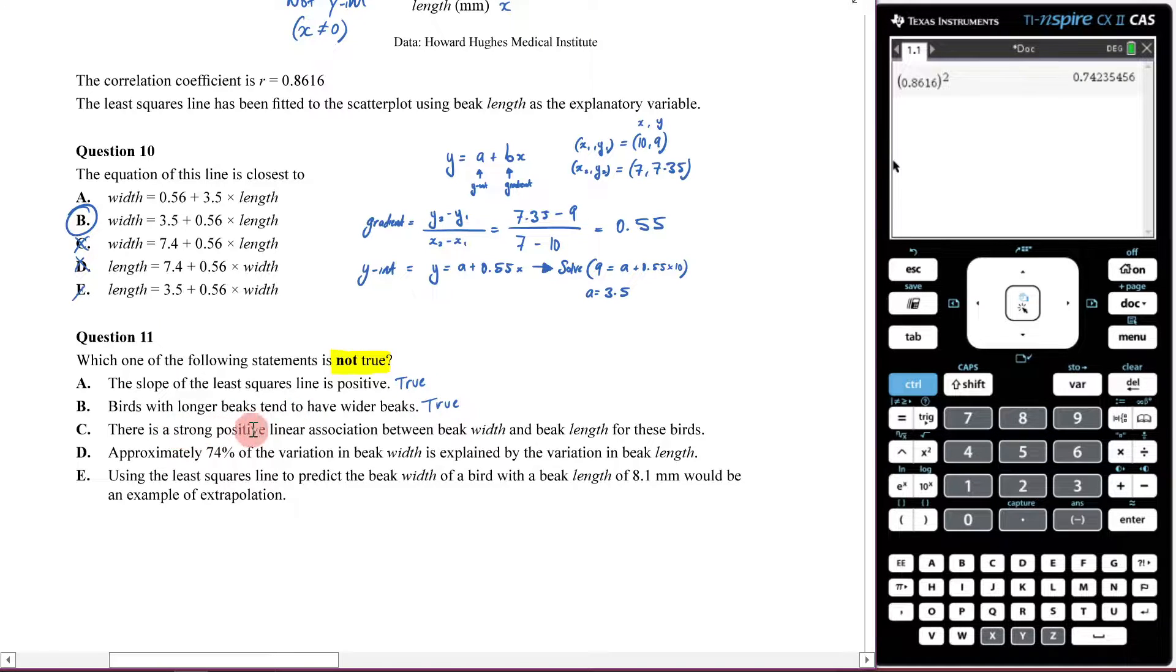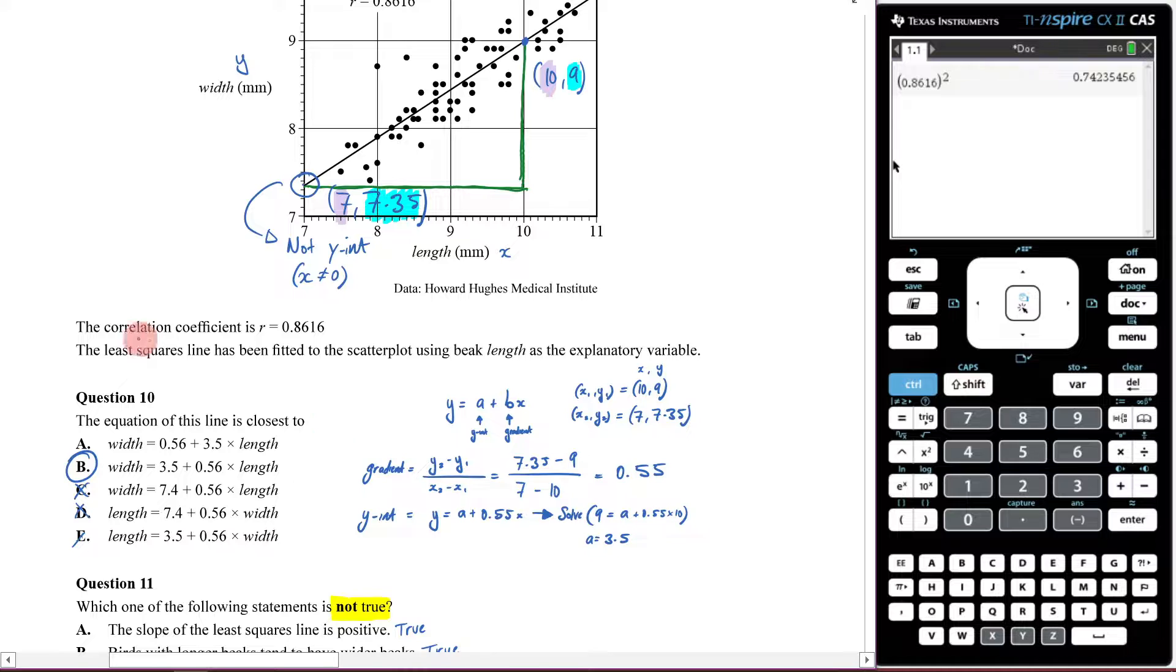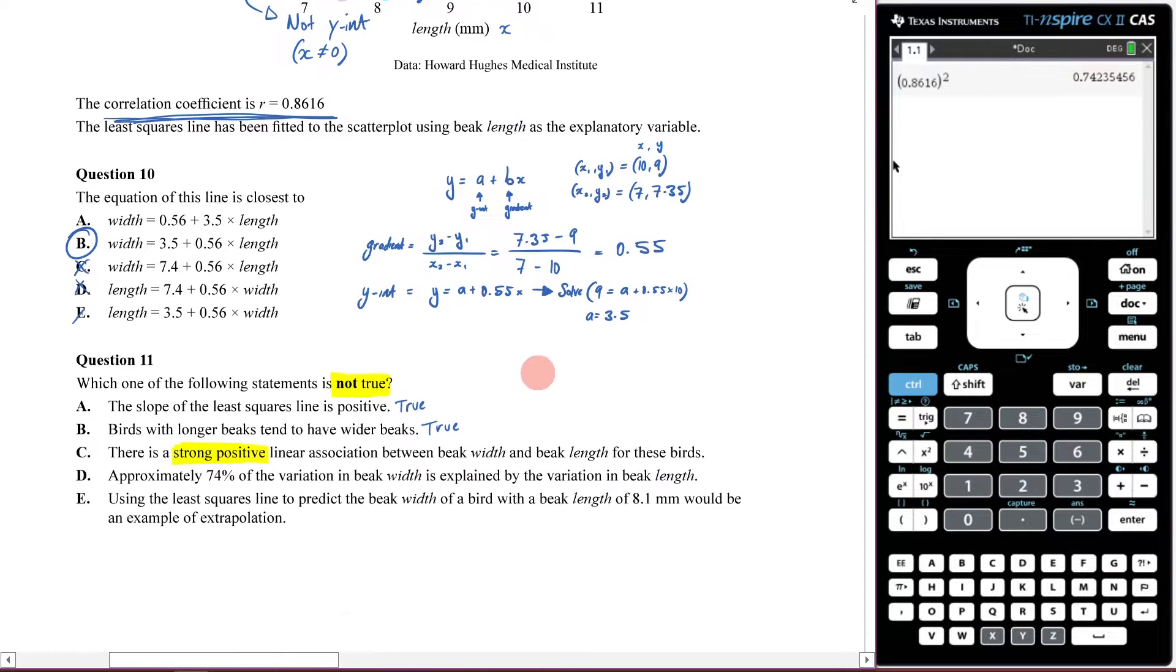There is a strong positive linear association between beak width and beak length. Your eye needs to be looking at 'strong positive' - this is where you're going to refer to your r value. Your correlation coefficient r is what tips you off.